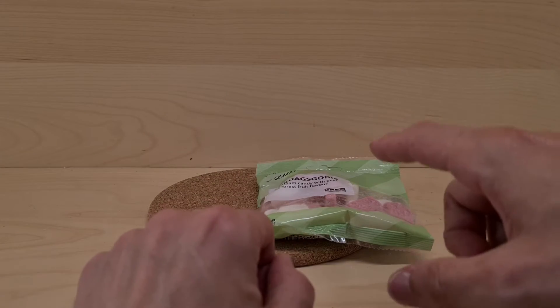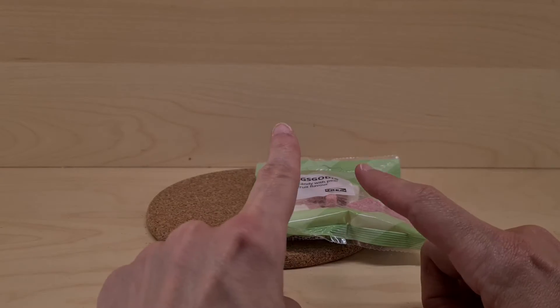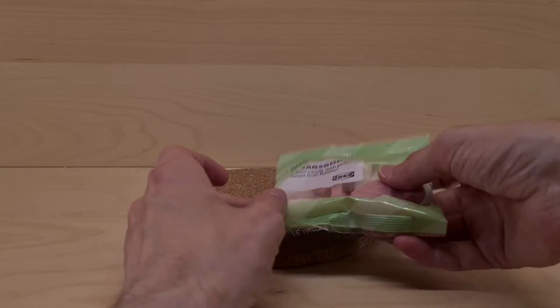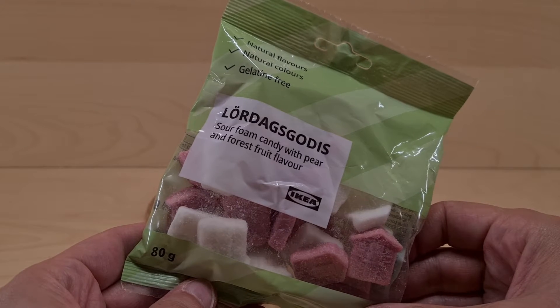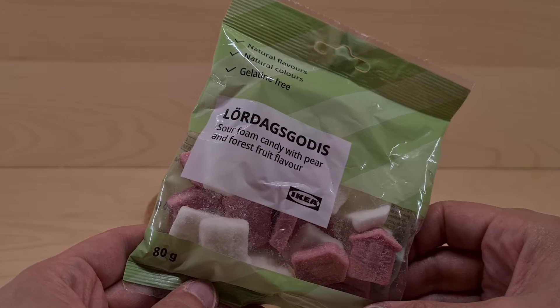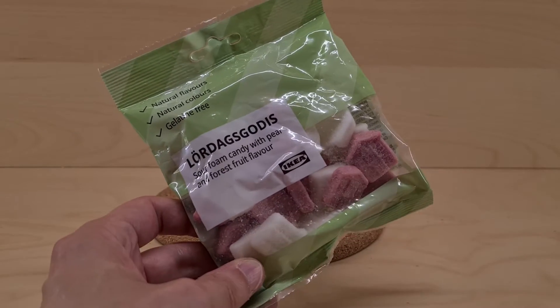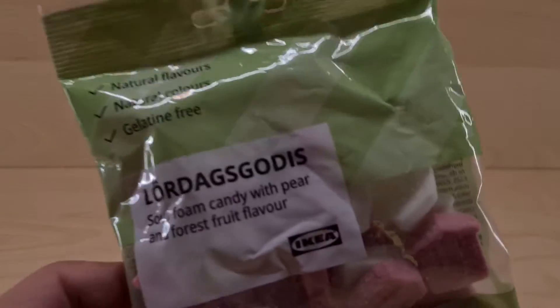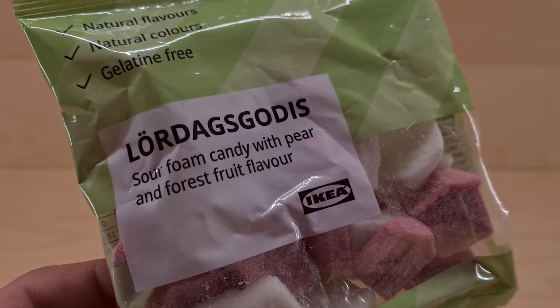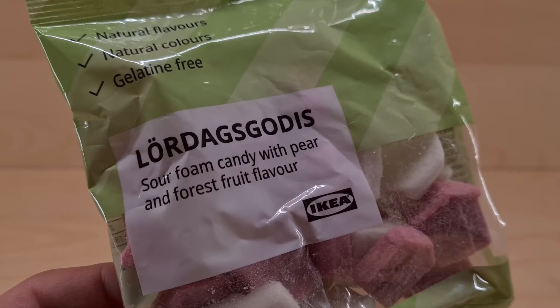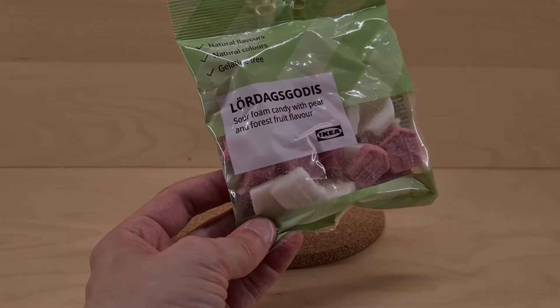So what we have here is Lordagodis - probably said that wrong again because that's what all these are called from IKEA. These ones are foam candy, sour foam candy with pear and forest fruit flavors. They look like little houses, can you see them?